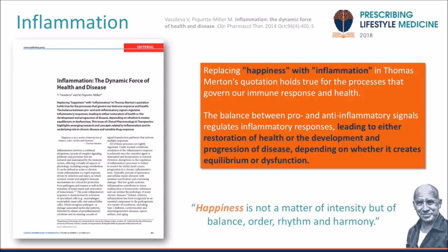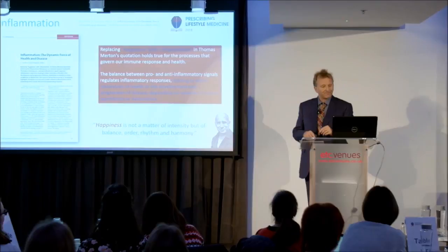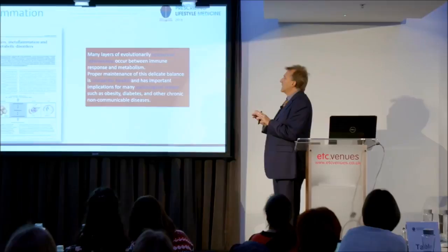Thomas Merton says that happiness is not a matter of intensity, but of balance and order, rhythm and harmony. If we swapped happiness for inflammation, that gives us a sense of the flow, the communication or dialogue that takes place. And if we're unable to manufacture appropriate anti-inflammatory responses, the reset position — the new dynamic — leads to persistent cellular and metabolic dysfunction in the person we're looking after. Inflammation is extensively written about in multiple journals, and I'm going to give you a very nutritionally orientated process working through different systems.